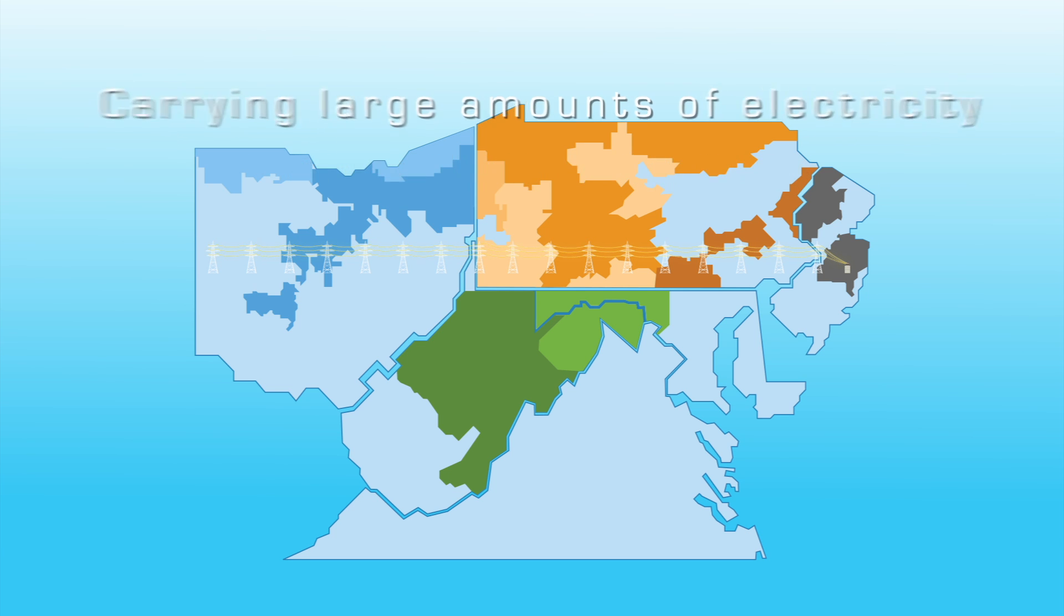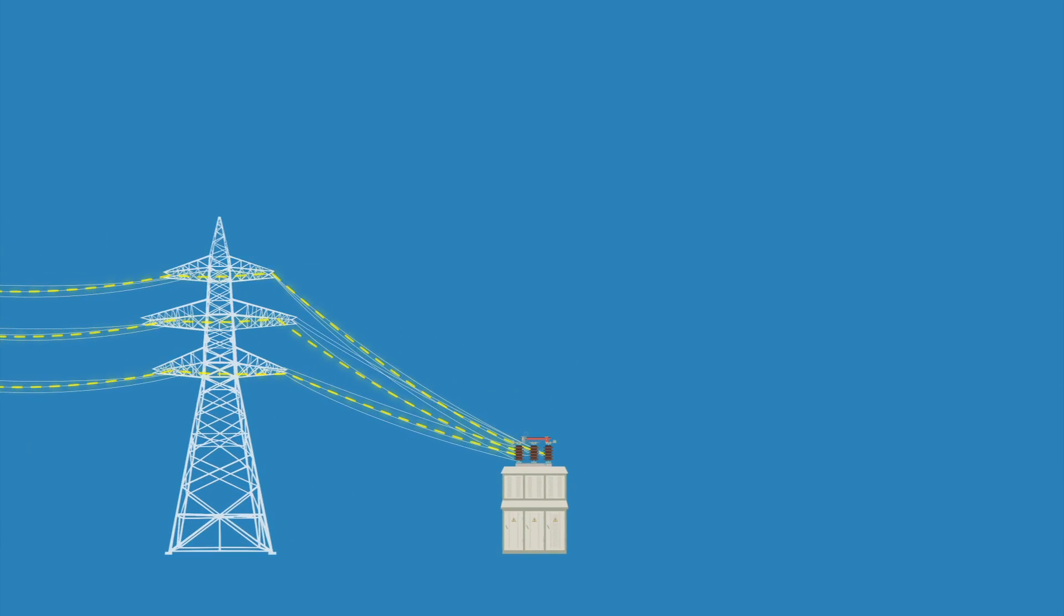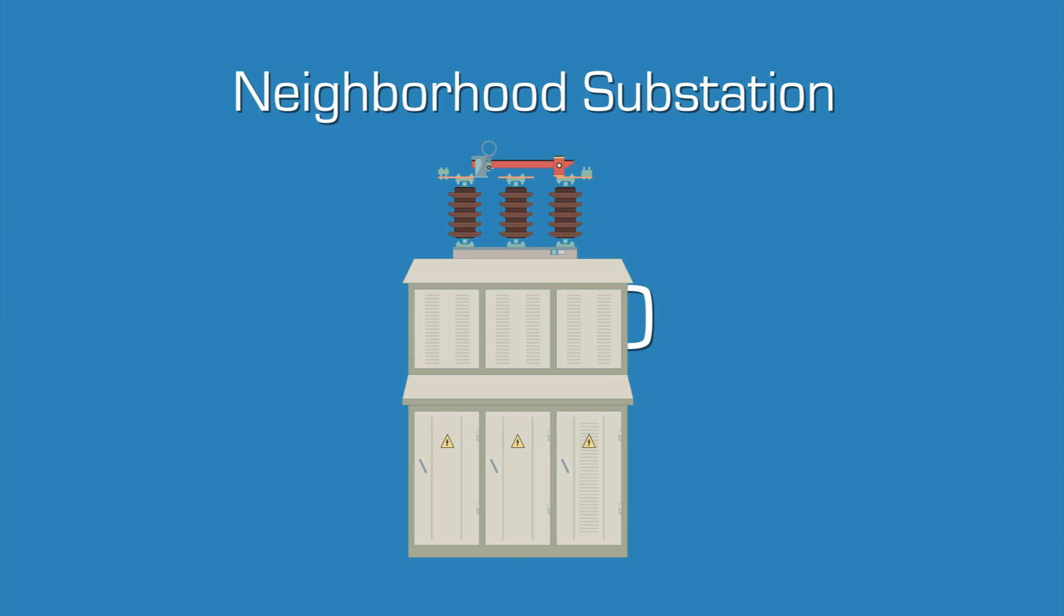After completing the first leg of its journey, electricity arrives at a neighborhood substation. The substation's job is to lower the voltage so that the power can be used in homes.